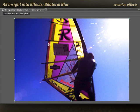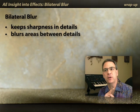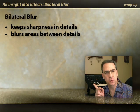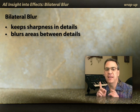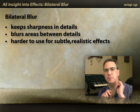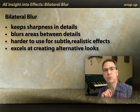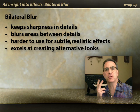So that's a nice creative application for Bilateral Blur. To summarize: Bilateral Blur tries to keep details while blurring soft areas in between those details. It's not so good when you're going for realistic things such as just improving the look of someone's face, but it is good at impressionistic imagery or creating special effects such as a filmic glow treatment.